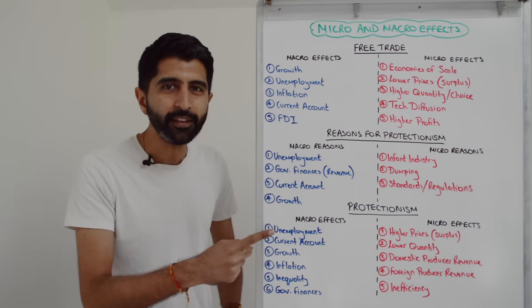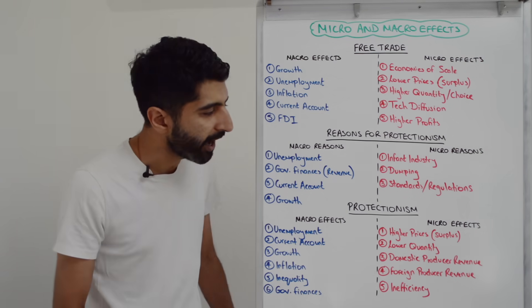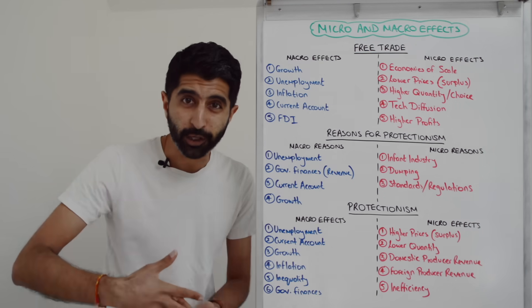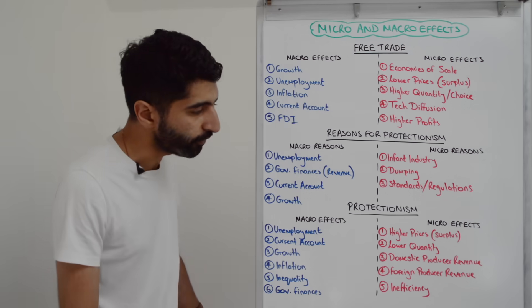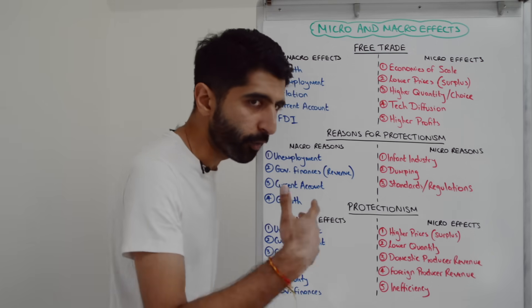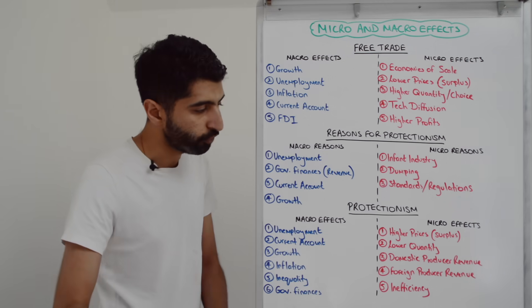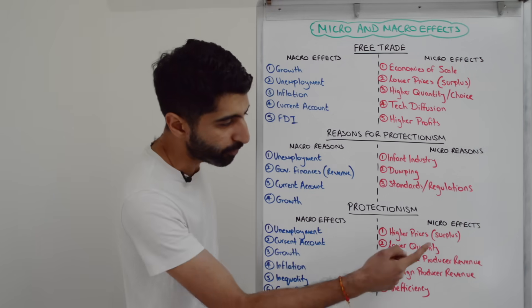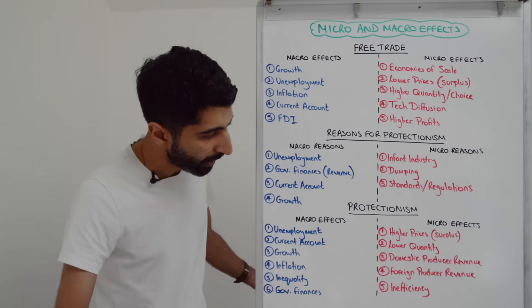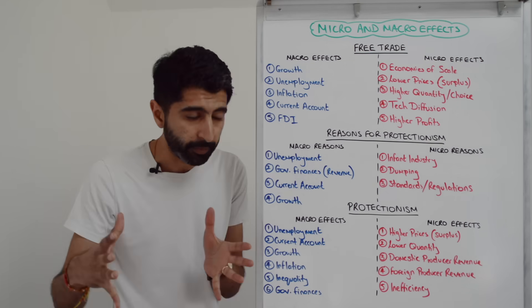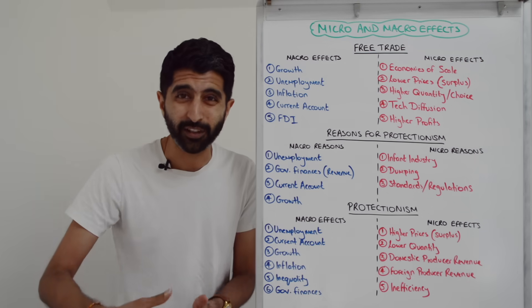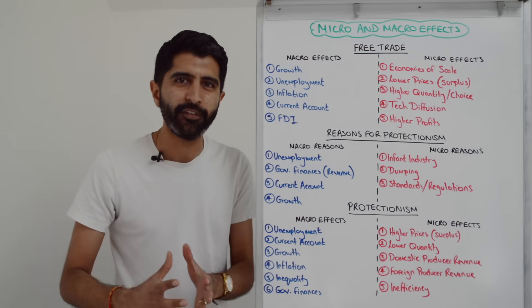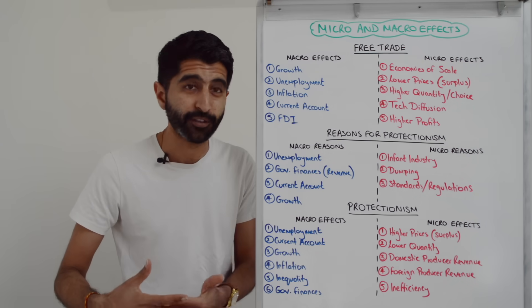On the micro side, a good way to think of these effects is to think of your tariff diagram. Higher prices link to lower consumer surplus but also higher domestic producer surplus. There are worries of lower quantity and choice — bad news for consumers and producers — and then your revenue impacts: domestic producer revenue will increase with a tariff, while foreign producer revenue will be squeezed. These are all micro effects. There's also the risk of inefficiency — allocative inefficiency and complacency — if tariffs are imposed and remain in place for a long period of time.